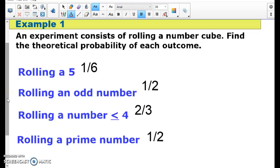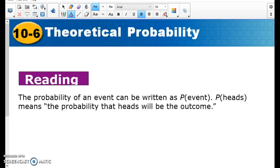That doesn't necessarily mean that I'm always going to get a five if I roll the dice six times, or an odd number if I roll the dice twice - I could get two even numbers. Things like that can happen. But this is in theory what should happen.